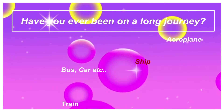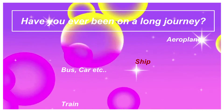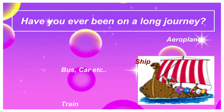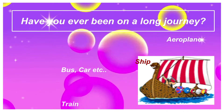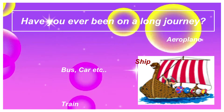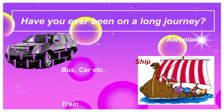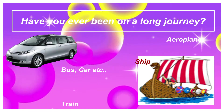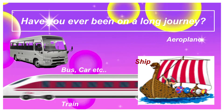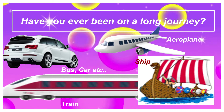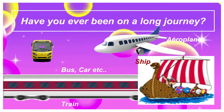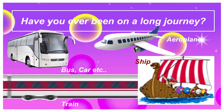How do you think these words are related to the question? These words are related because we go on journeys using these means of transport — ship, bus, car, van, train, and aeroplane. So today we will plan a journey by ship.